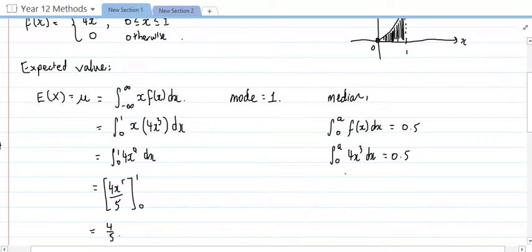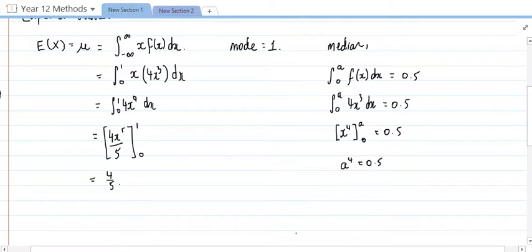And evaluating this, we're going to get the integral, which is 4x to the 4 over 4, which just becomes x to the power of 4. So we're going to get the integral between 0 and A, which is equal to 0.5. Subbing the 0 in isn't really going to do anything, so we end up with A to the power of 4 equals 0.5, which means that A equals the 4th root of 0.5.